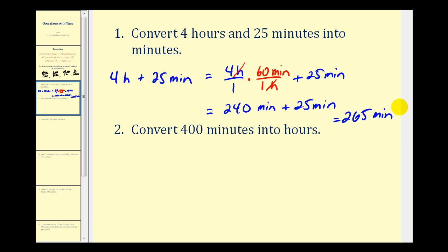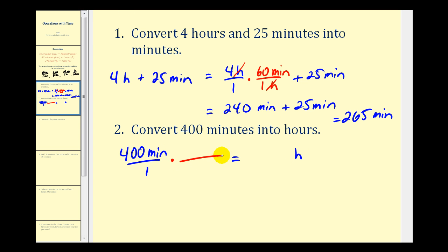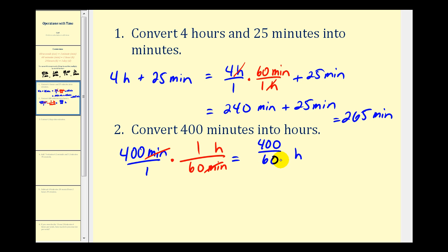Now let's take a look at a conversion in the opposite direction. We want to convert four hundred minutes into hours. We'll start by putting four hundred minutes over one. We want our answer in hours, so our unit fraction will have minutes in the denominator so those units simplify out, and the conversion is one hour equal to sixty minutes.